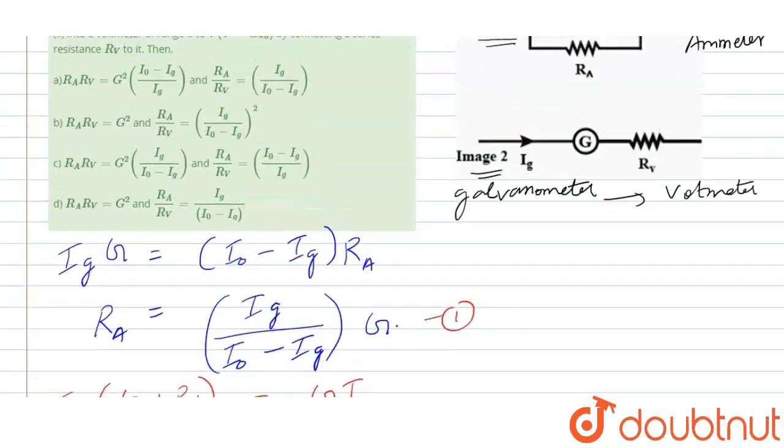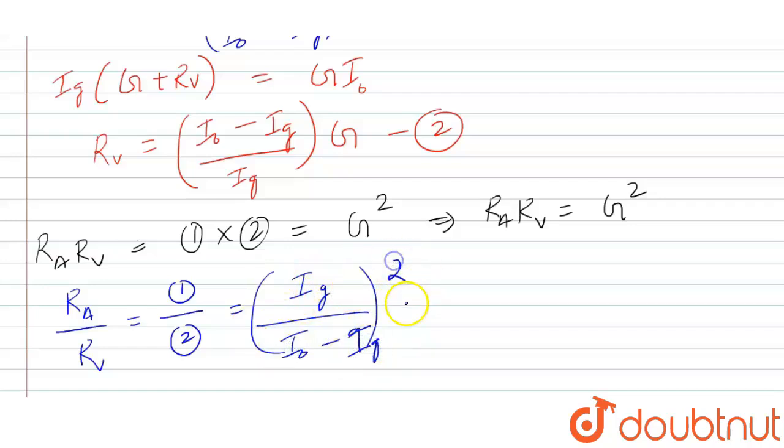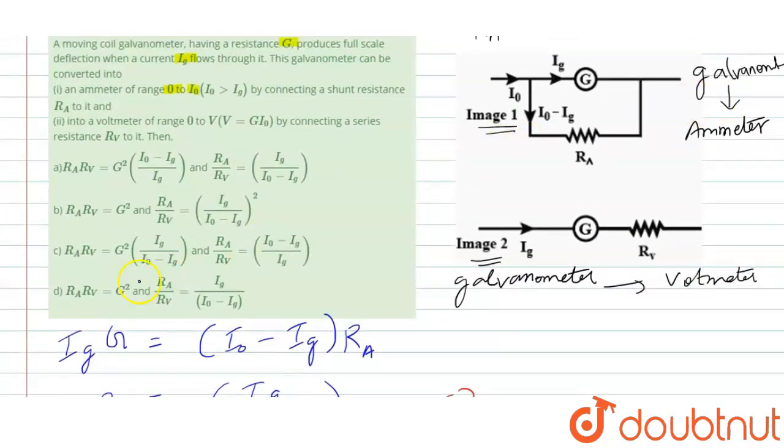What about the other term they are asking? It is RA upon RV. So RA upon RV, the second one. RA upon RV, that is basically 1 upon 2. If I do that, 1 upon 2, what happens? In that case, G is going to get cancelled and I will get the relation between IG and I0 minus IG. We can see that we will get IG upon I0 minus IG, the whole square. Both will get multiplied with itself. Therefore, RA upon RV is equal to IG upon I0 minus IG, the whole square. So according to that, which option is correct?